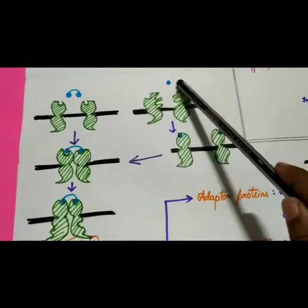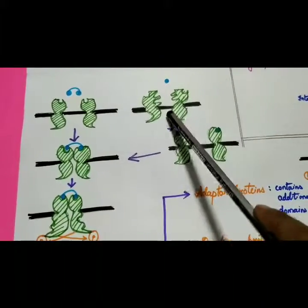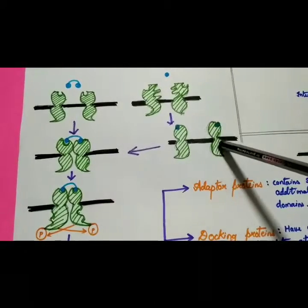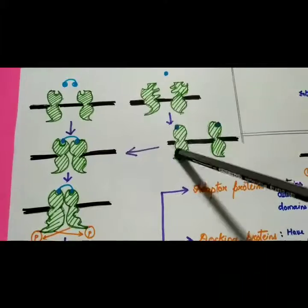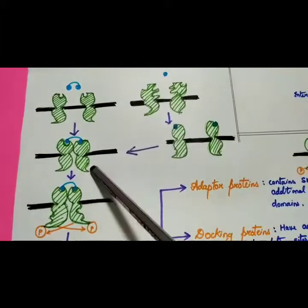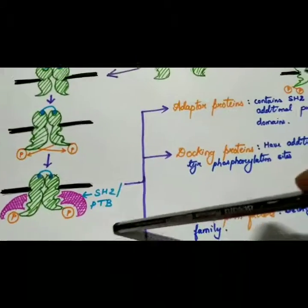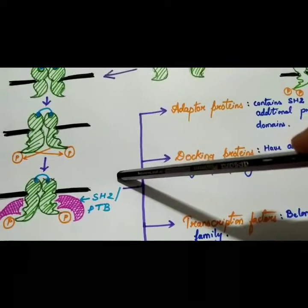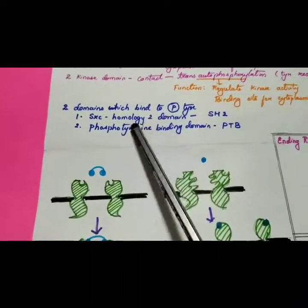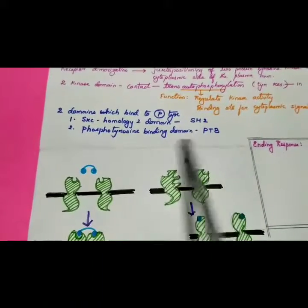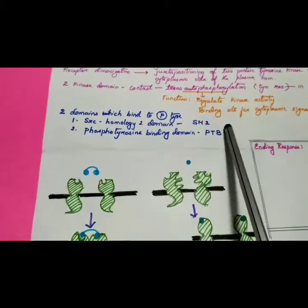In receptor-mediated dimerization, the ligand binds to one receptor side, resulting in a conformational change in that protein. This conformational change causes two receptors to dimerize, and the same downstream pathway continues. The two key domains that bind to phosphorylated tyrosine are SH2 (SRC homology 2 domain) and PTB (phosphorylated tyrosine binding domain).